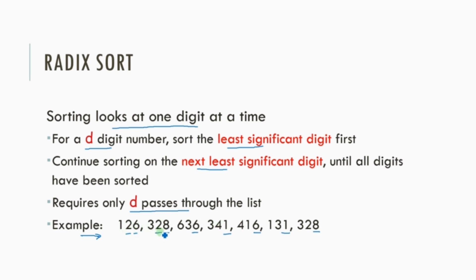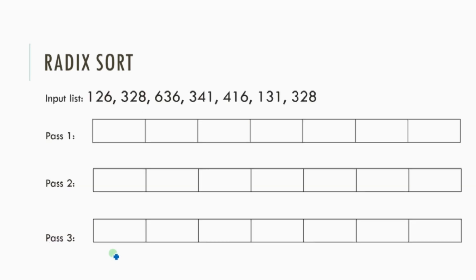The second digits are 2, 2, 3, 4, 1, 3, and 2. Finally, the numbers will be sorted based on the leftmost digits: 3, 1, 4, 3, 6, 3, and 1. As these numbers are 3-digit numbers, there will be 3 passes. In the first iteration, the least significant digit will be considered as the key to sort. So for the first round, the keys are 6, 8, 6, 1, 6, 1, and 8.